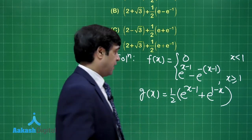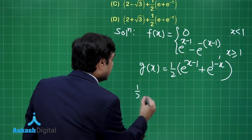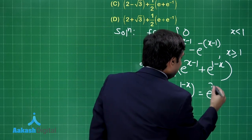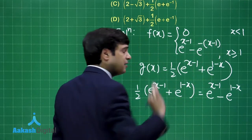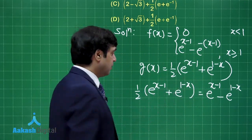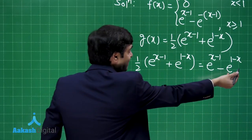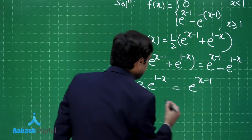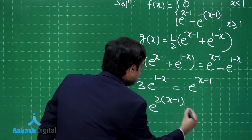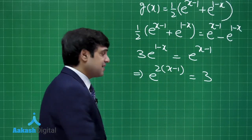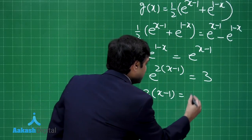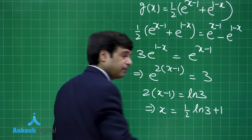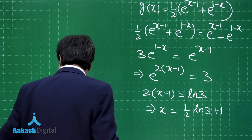Solving: ½(e^(x−1) + e^(1−x)) = e^(x−1) − e^(1−x). Cross-multiplying by 2: e^(x−1) + e^(1−x) = 2e^(x−1) − 2e^(1−x), which gives 3e^(1−x) = e^(x−1), or e^(2(x−1)) = 3. Taking log: 2(x − 1) = log 3, so x = ½ log 3 + 1. That is the intersection point.